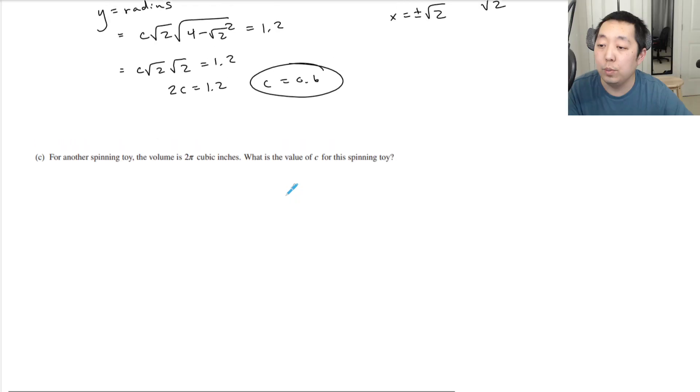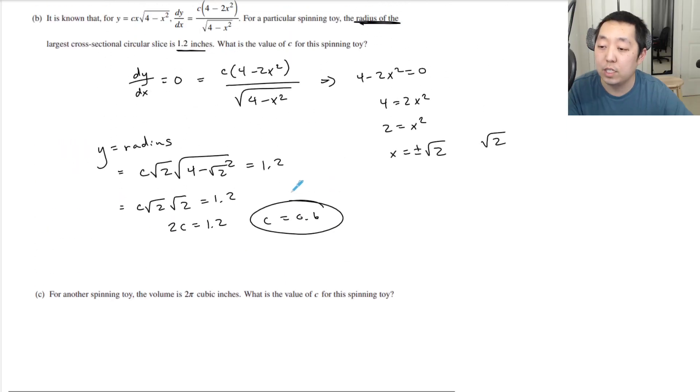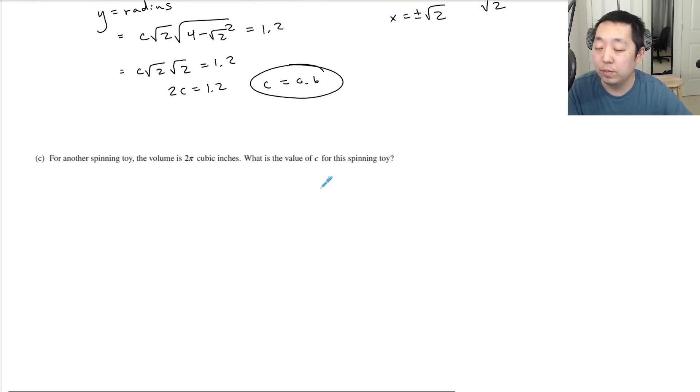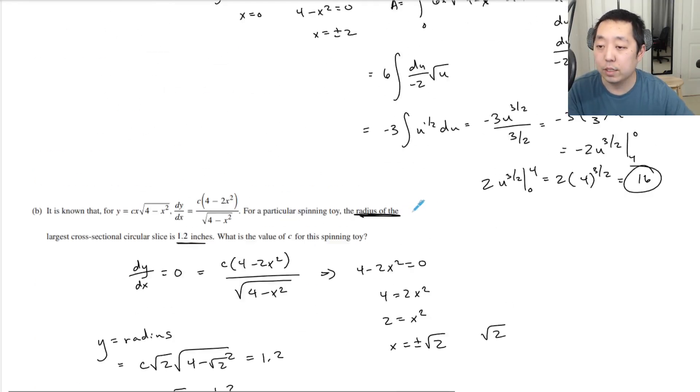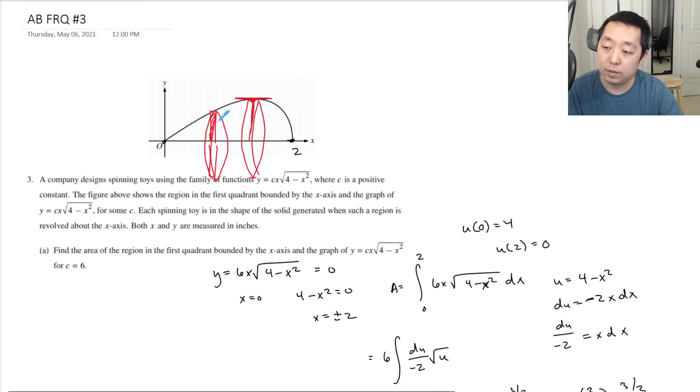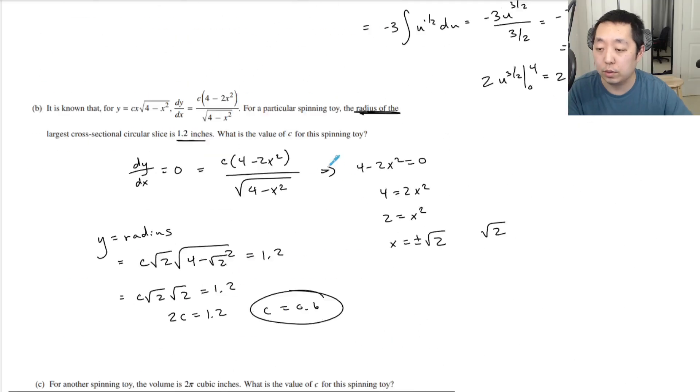Part (c): For another spinning toy, the volume is 2π cubic inches. What is the value of c for this spinning toy? So now I have to do the volume. Remember, we're making discs, and the volume of each disc dV is π·r²·dx because the width of my little rectangles is dx. The radius of this disc is just the y value, so it's π·y²·dx.